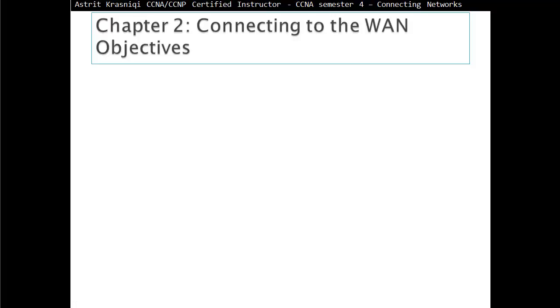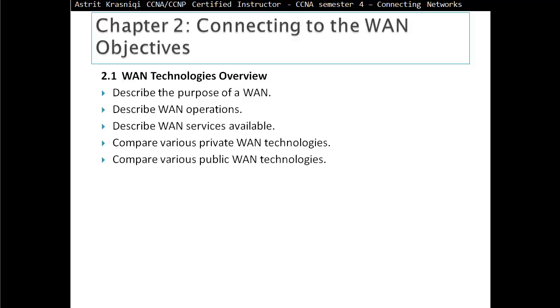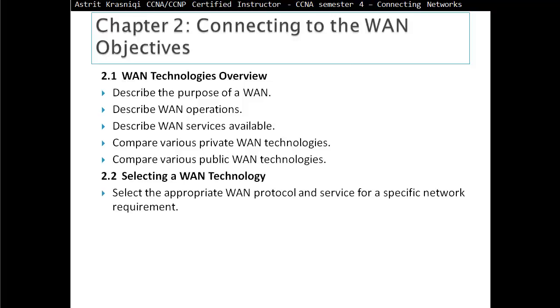Chapter 2 objectives: Section 2.1, Wide Area Network Technologies Overview. In here we describe the purpose of WAN, describe the WAN operations, describe the WAN services available, compare various private WAN technologies, and compare various public WAN technologies. Then we move on to Section 2.2, select the WAN technology, and select the appropriate WAN protocol and services for specific network requirements.